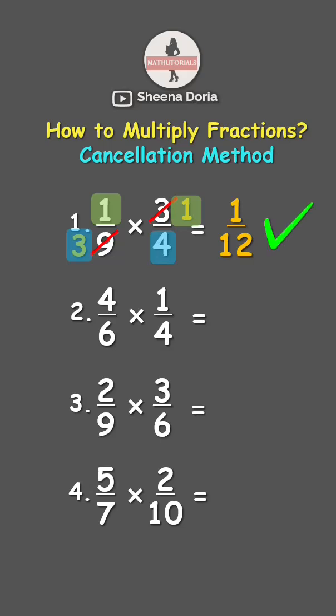Next, 4/6 times 1/4. We can cancel out the number 4 in the numerator and in the denominator by dividing them both by 4. So that's 4 divided by 4, which is 1, same with the denominator.